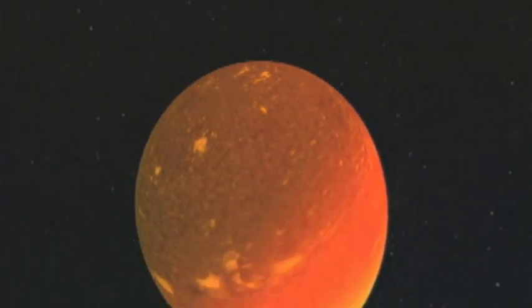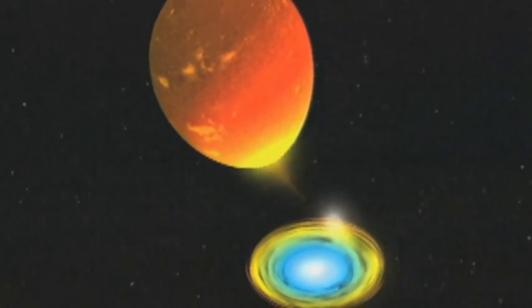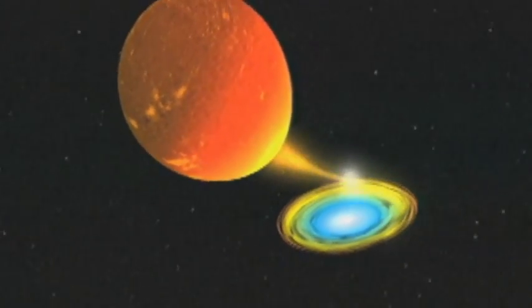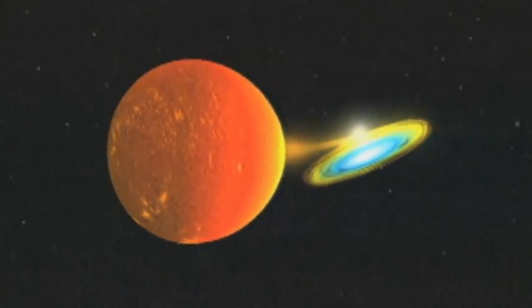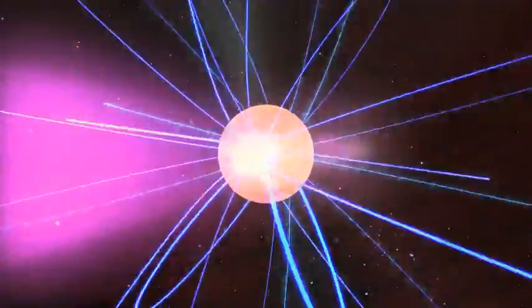Each X-ray binary is made up of a normal star and a star which has passed beyond the end of its life. These companions are exotic things, most commonly a neutron star, but sometimes a black hole.